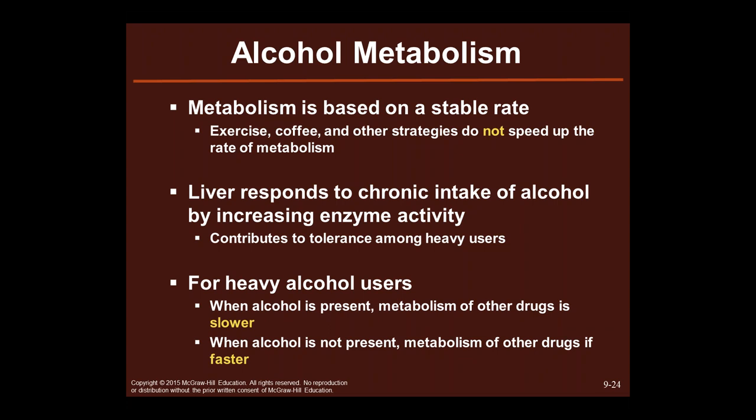The liver responds to chronic intake of alcohol by increasing enzyme activity, which contributes to tolerance among heavy users. If you drink alcohol chronically, the liver has this increased enzyme activity as its new normal, and you have to keep increasing your alcohol use until you die — or stop drinking. For heavy alcohol users, when alcohol is present, metabolism of other drugs is slower; when alcohol is not present, metabolism of other drugs is faster. Alcohol can change your brain permanently, your liver permanently, your metabolism and functioning permanently if used in high doses over a period of time.